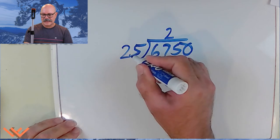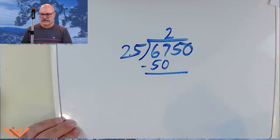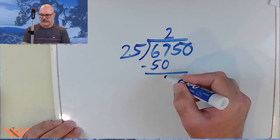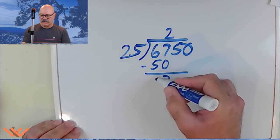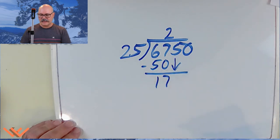So, I can only do 2 right here. So, 2 times 25 is 50. And I subtract that. So, 7 minus 0 is 7. 6 minus 5 is 1. And 5 just comes on down. I'm going to bring that down.